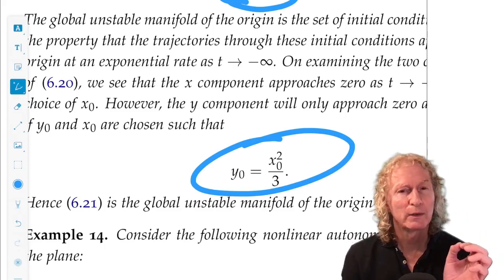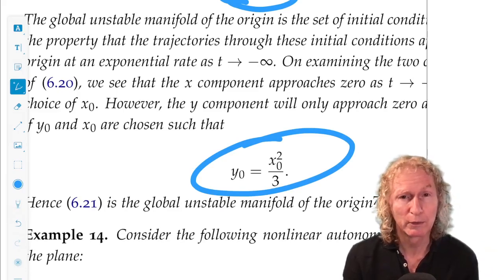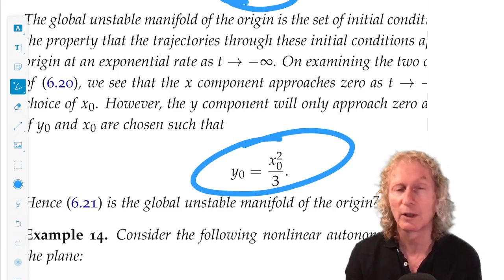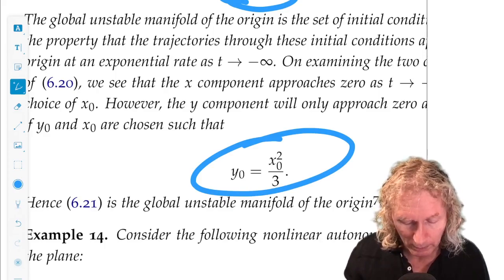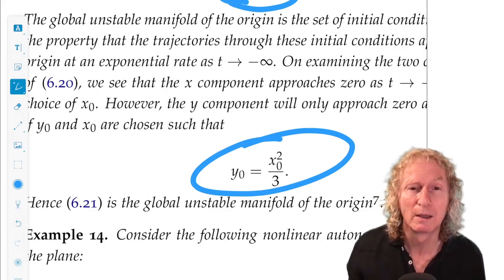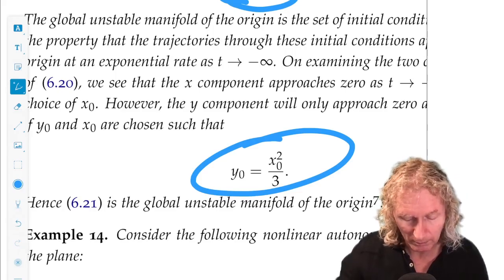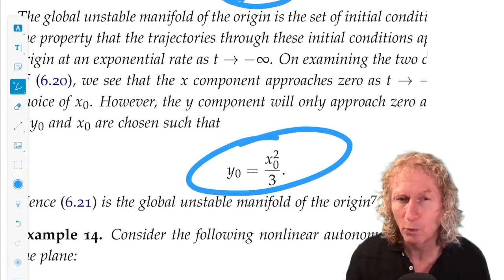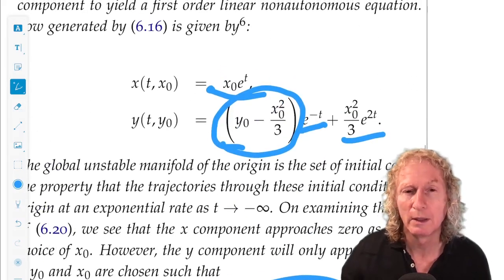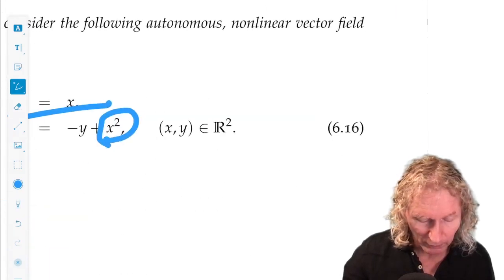So, invariant sets are made up of trajectories. And invariant manifolds and invariant curves are examples of sets that are made up of trajectories. So, we characterize them by the nature of the initial conditions for all the trajectories. And this is what we get. So, this is two ways of seeing the nature of the stable and unstable manifold of the origin for this example.